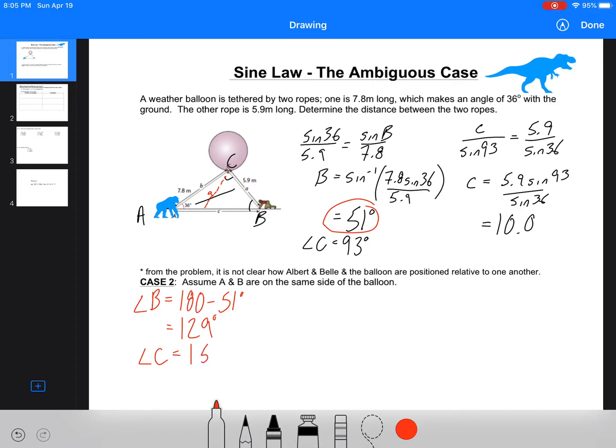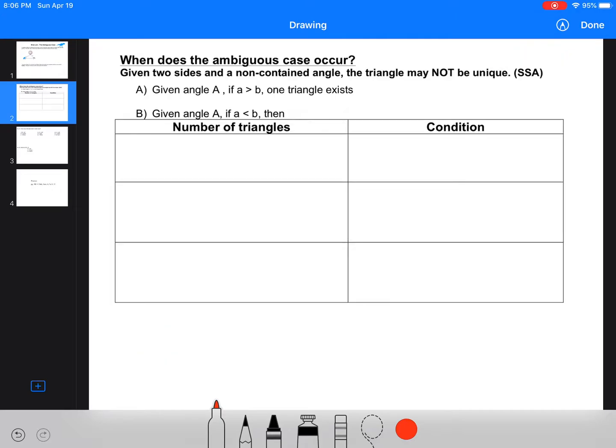But then that means that angle C in this case is 180 minus 129 minus 36, and we get 15. And you can see how this is going to give us a drastically different answer. So C here is going to be 5.9 times sine of 15, subbing in 15 for 93, and then we've got sine 36. This one gives us 2.6 meters. So without more information, we'd actually have to include both of these answers. So either 10 meters or 2.6 meters apart. We don't know without more information.